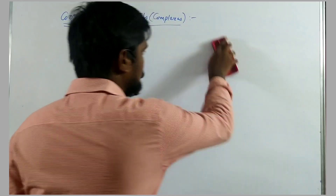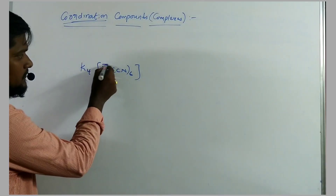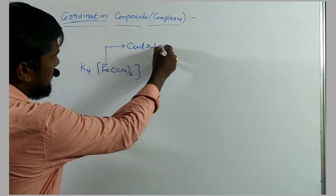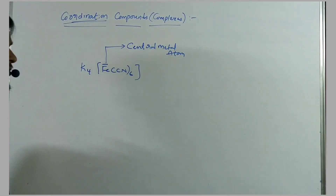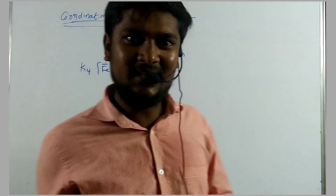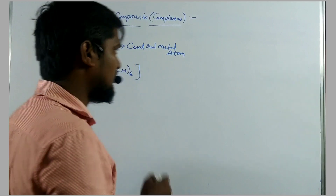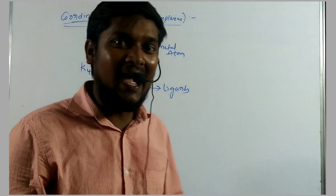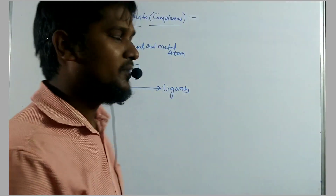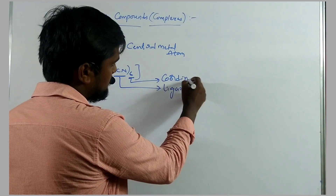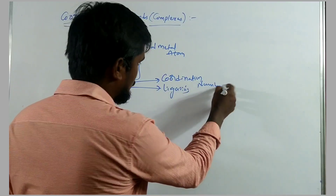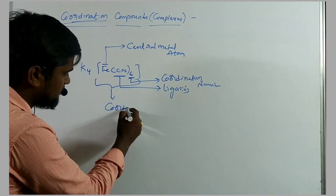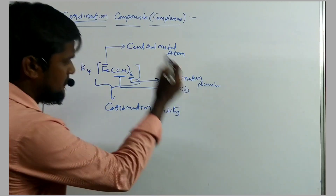Inside the square bracket, there is a transition metal element known as the central metal atom. The central metal atom is coordinated by several types of ligands. The total number of atoms connected to the central metal atom is known as the coordination number. The total entities present in the coordination sphere are called coordination entity.